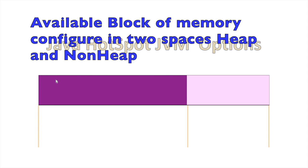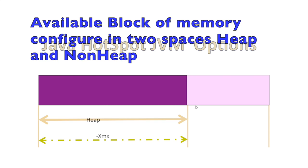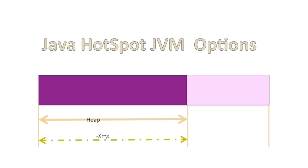Consider this as a continuous block of memory. This memory we define as heap. Heap is the area where all objects live and are garbage collected. To configure the size of the heap, we use the option -Xmx.